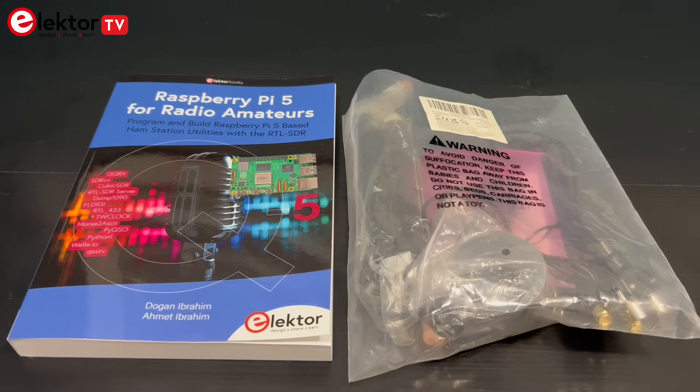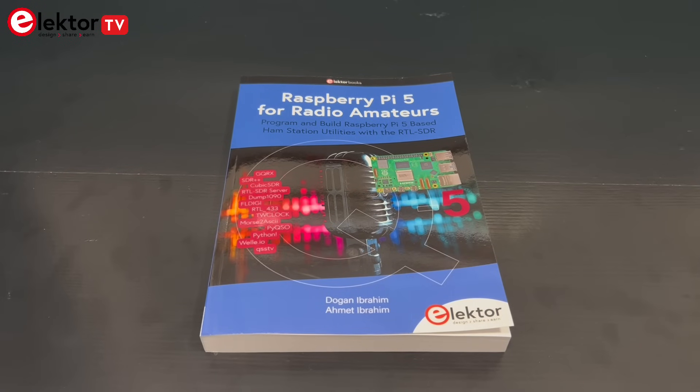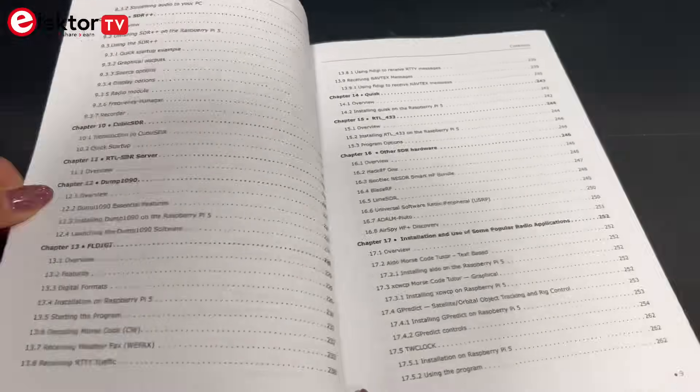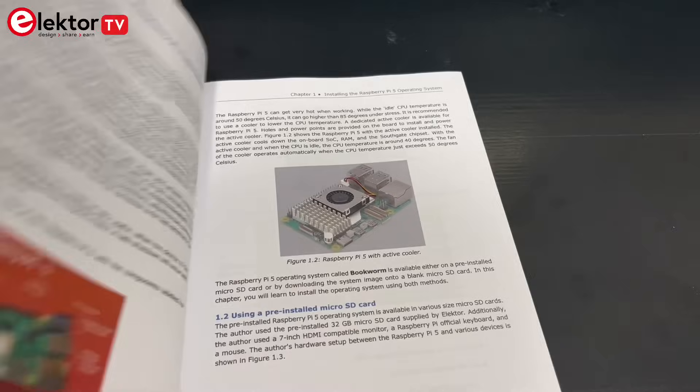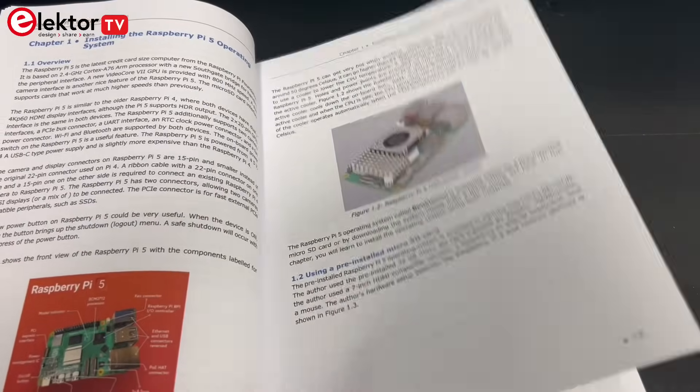This bundle contains the RTL-SDR V4 and the Raspberry Pi 5 for Radio Amateurs book by Dogan Ibrahim and Ahmed Ibrahim. The book serves as a comprehensive guide for integrating the Raspberry Pi 5 into amateur radio applications.